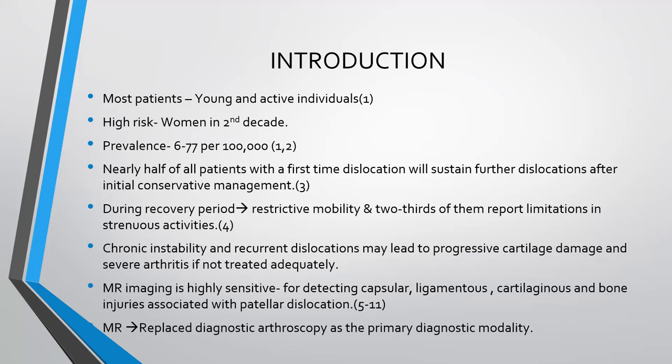Brief introduction about patellar instability: most patients are young and active individuals. High risk are women in the second decade. The prevalence is 6 to 77 per 1 lakh. Nearly half of all patients with first-time dislocation will sustain further dislocation after initial conservative management. During the recovery period, restrictive mobility occurs, and two-thirds report limitations in strenuous activities. Chronic instability and recurrent dislocation may lead to progressive cartilage damage and severe arthritis if not treated adequately. MR imaging is highly sensitive for detecting capsular, ligamentous, cartilaginous, and bone injuries associated with patellar dislocation.